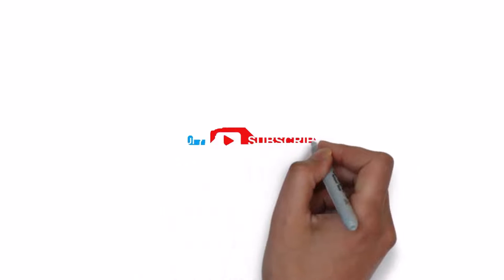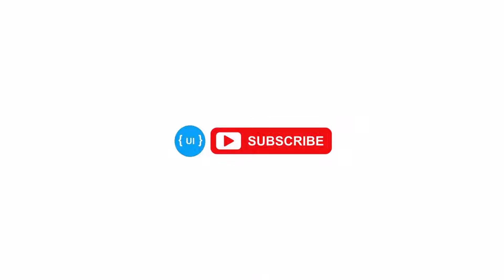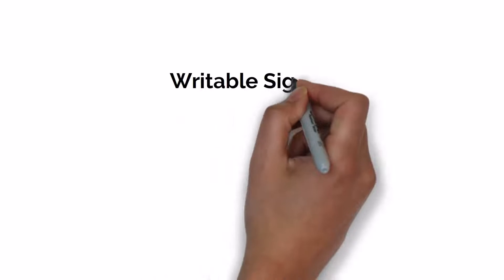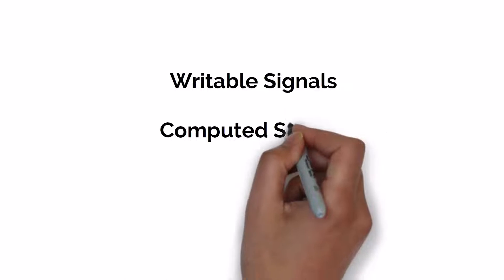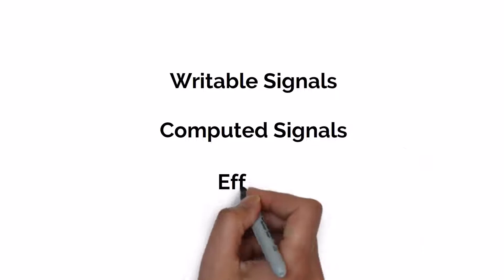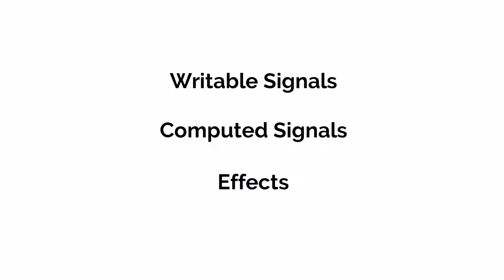To understand about signals we need to know about three reactive primitives: writable signals, computed signals, and effects. Writable signals are a specific type of signal in Angular that allow you to modify their value directly.